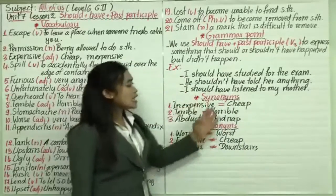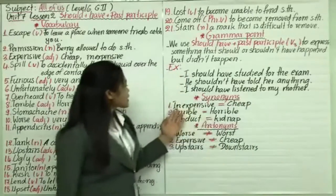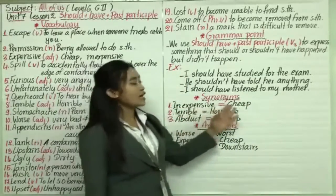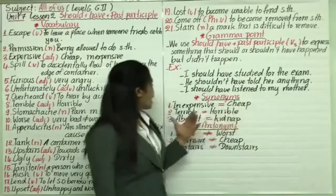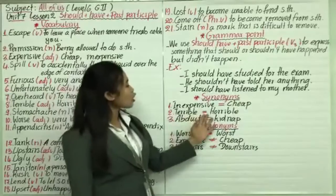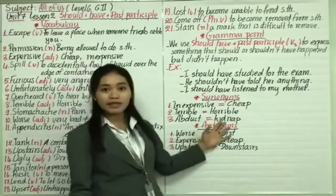And about synonyms and antonyms. Synonyms are words that have the same meaning with each other. For example, inexpensive means cheap. Inexpensive, obviously not expensive, so it means cheap. Terrible means very bad. It's qualified as horrible. Abduct means to take someone away, it means kidnapped.